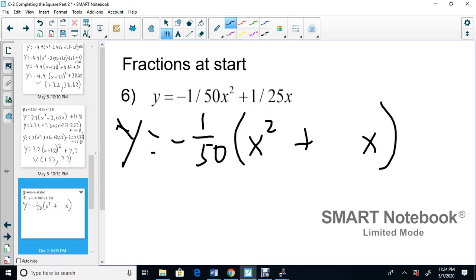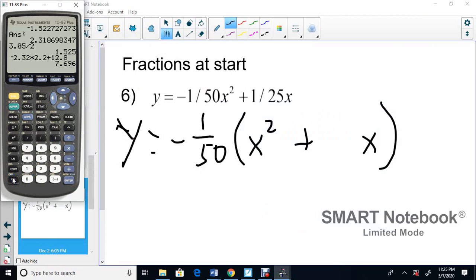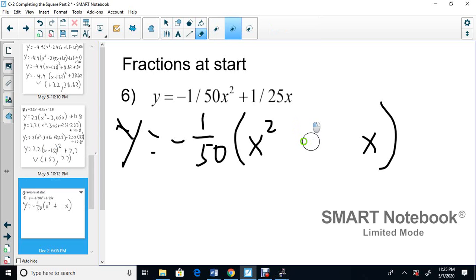Or what's 1 divided by 25 divided by negative 1/50? I'll put it in the calculator and I'll show you what you get. I know my answer is 2, but let's just take a look. So I'm going to go 1 divided by 25 here, enter. That's 0.04 divided by bracket negative 1 divided by 50, close the bracket. Negative 2. So it should be negative 2 here. Negative 2x.